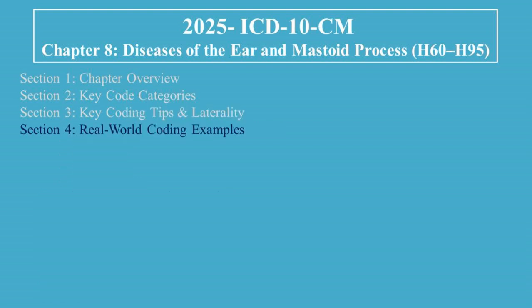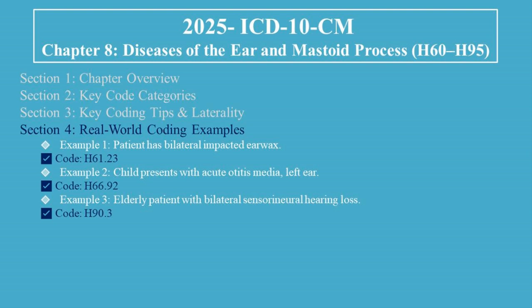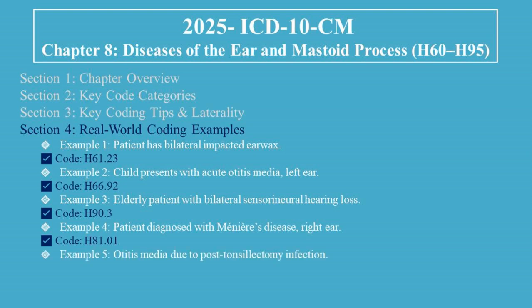Here are real-world coding examples. Example 1: Patient has bilateral impacted earwax — Code H61.23. Example 2: Child presents with acute otitis media, left ear — Code H66.92. Example 3: Elderly patient with bilateral sensorineural hearing loss — Code H90.3. Example 4: Patient diagnosed with Meniere's disease, right ear — Code H81.01. Example 5: Otitis media due to post-tonsillectomy infection — Code H95.0.